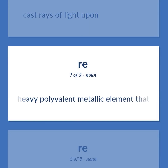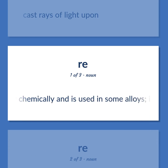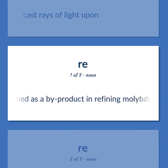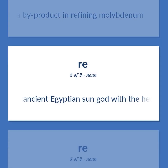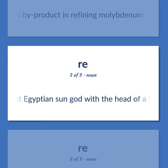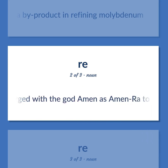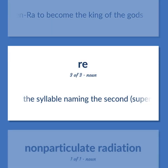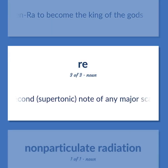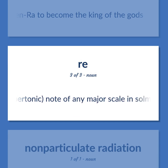A rare heavy polyvalent metallic element that resembles manganese chemically and is used in some alloys; obtained as a by-product in refining molybdenum. Ancient Egyptian sun god with the head of a hawk; a universal creator; he merged with the god Amen as Amen-Ra to become the king of the gods. The syllable naming the second, supertonic, note of any major scale in solmization.